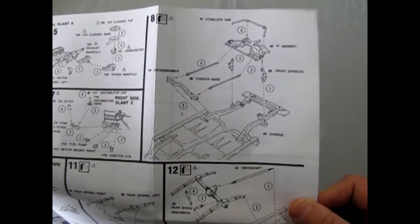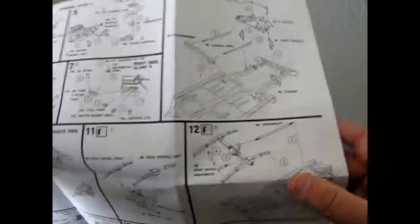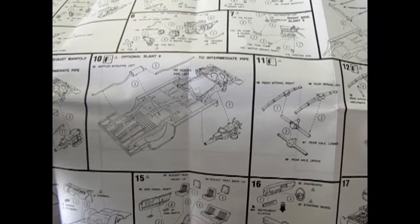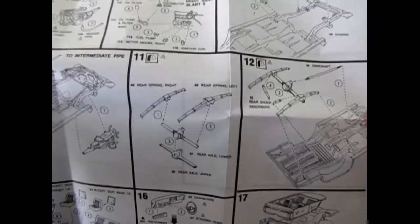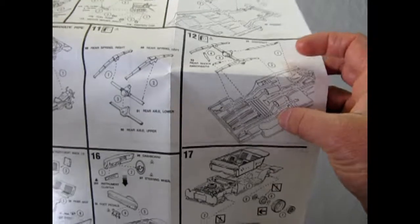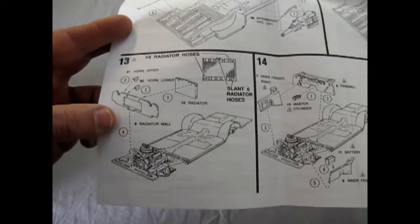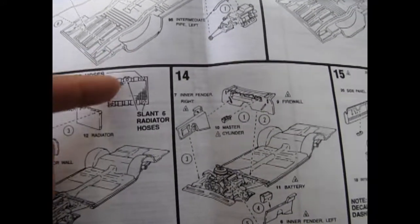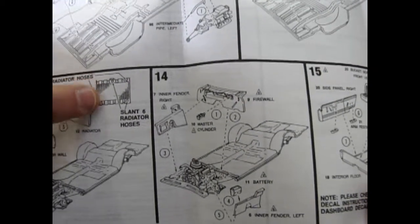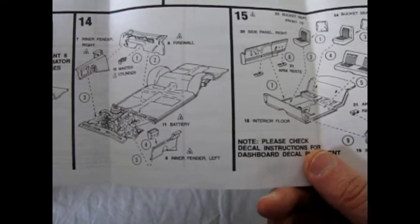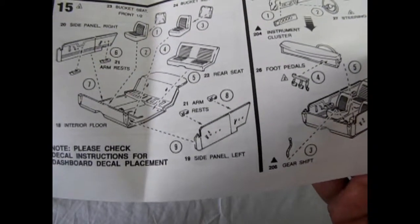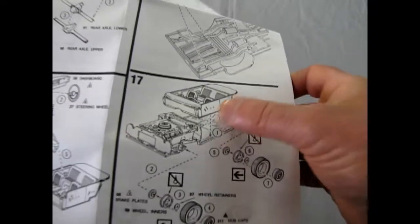And then the suspension is much the same. It's got a K-member with the torsion bars and the front steering spindles. Here we go into the V8 with the separate exhaust pipes, and the Slant 6 with the single muffler and tailpipe. Four-piece rear differential. And then you add in your shock absorbers and the driveshaft and drop it in underneath. Then we get our radiator wall and the horns and radiator hose. It shows V8 hoses are there and there, and the Slant 6 is dead top and off to this bottom side there.